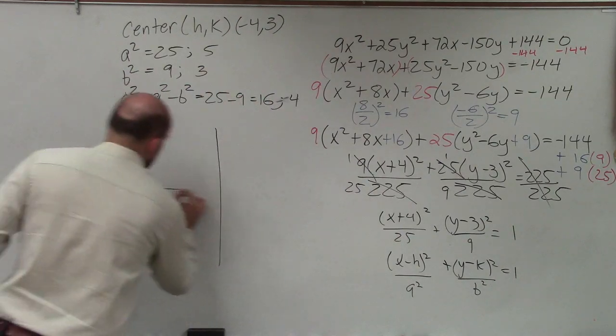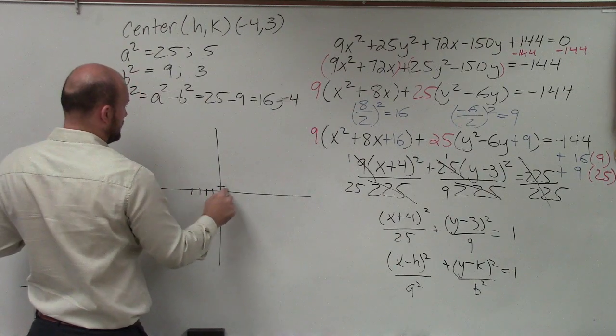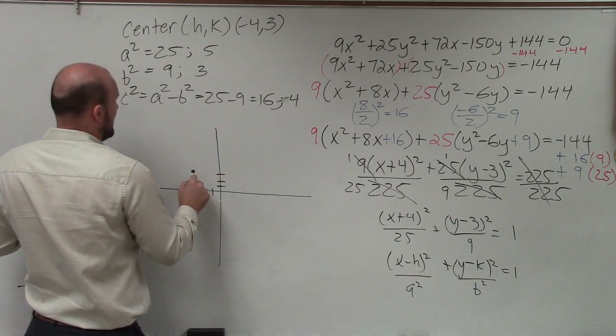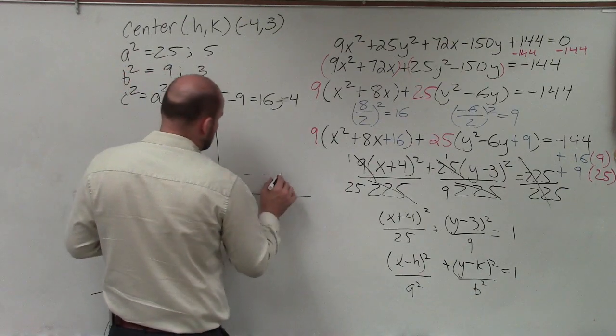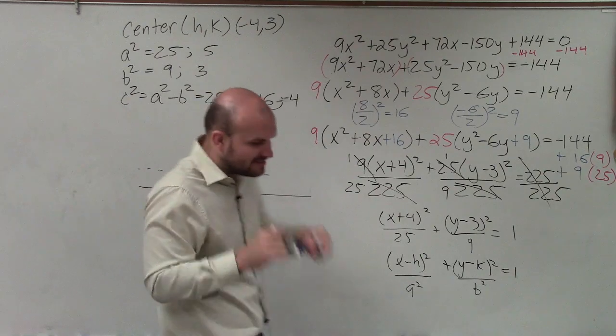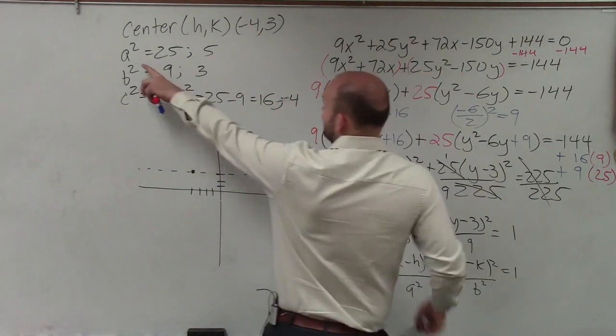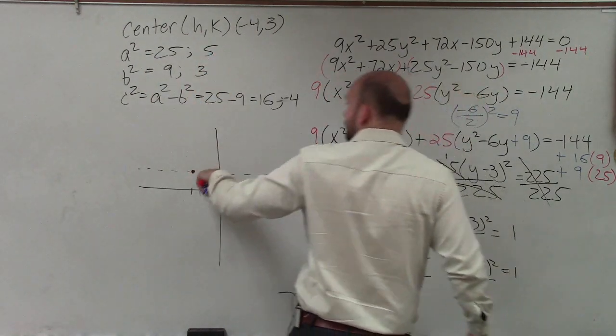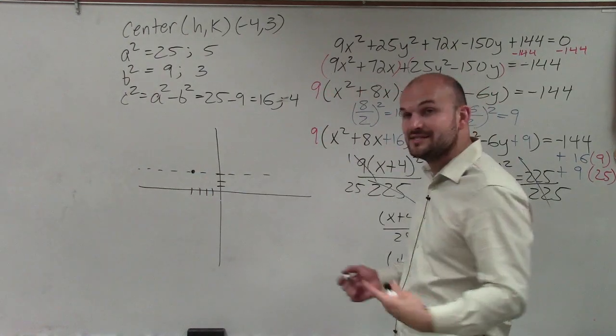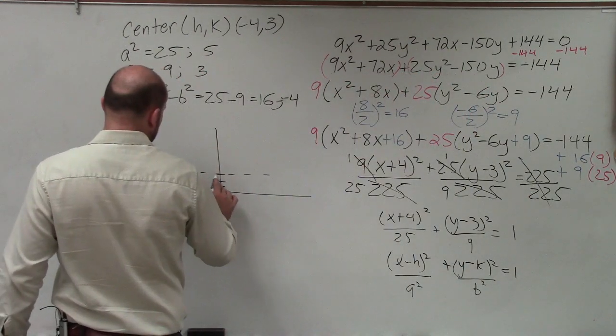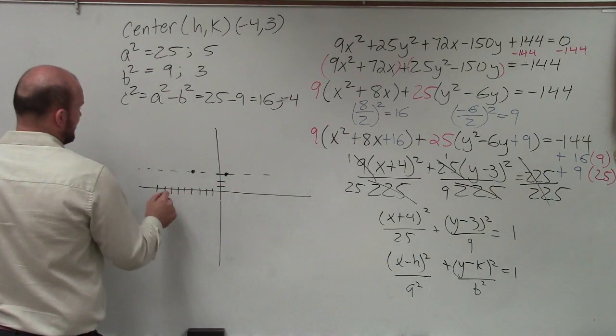So with all that information in store now, I can plot the center, which is at (-4, 3). And remember, since a² was under x, that means I have a horizontal major axis symmetry. The major axis of symmetry is where your foci, your center, and your vertices are all going to lie. So when it says a is 5, I'm going to go to the left and to the right, 5 units to find the two vertices. So I go over 5 to the right and 5 to the left.